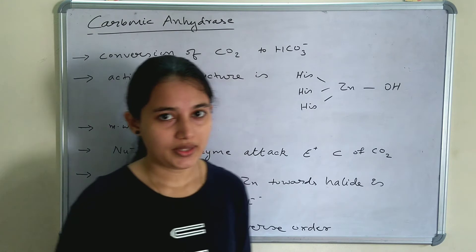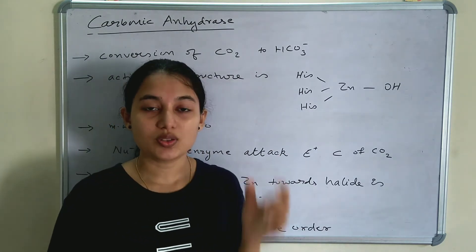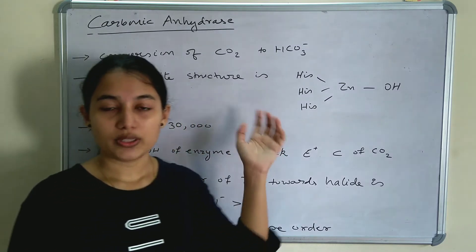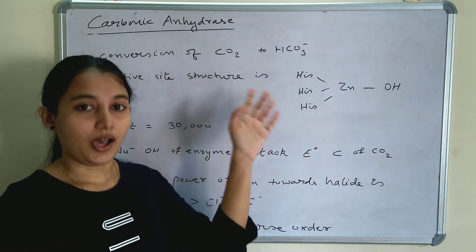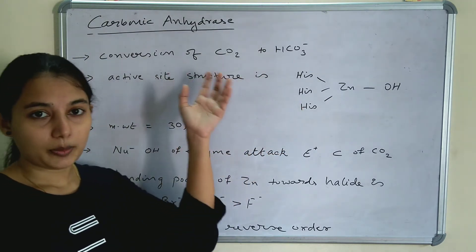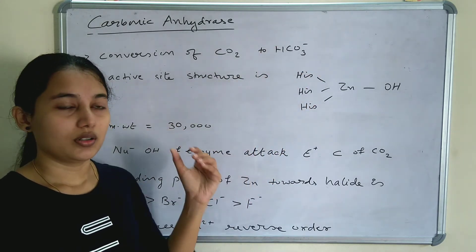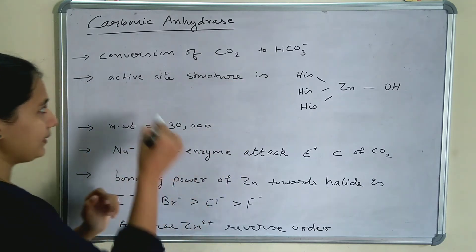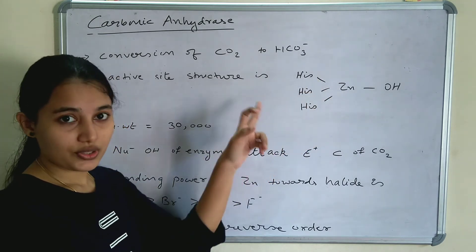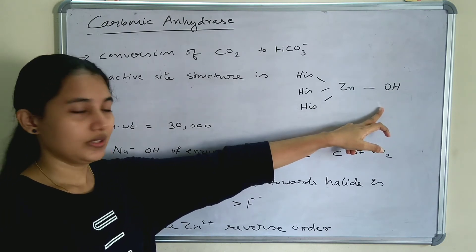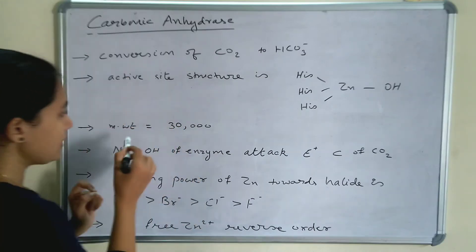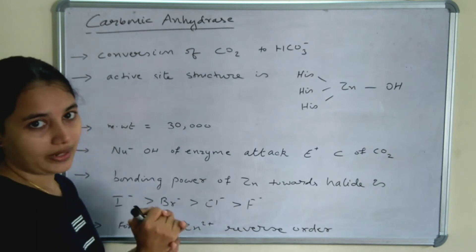Now let's move on to carbonic anhydrase. Like carboxypeptidase A, carbonic anhydrase also contains zinc as the metal atom and is a metalloenzyme. The function of carbonic anhydrase is to convert carbon dioxide to bicarbonate ion: CO₂ → HCO₃⁻. The molecular weight of carbonic anhydrase is 30,000.